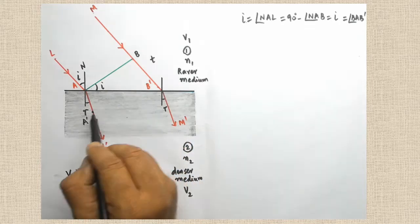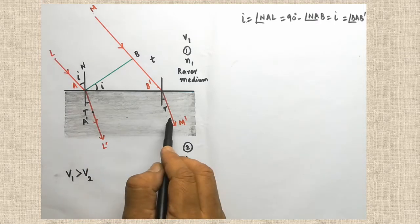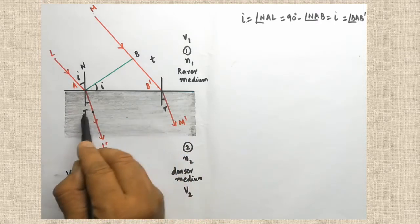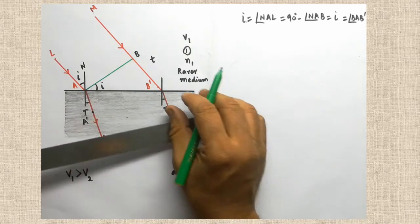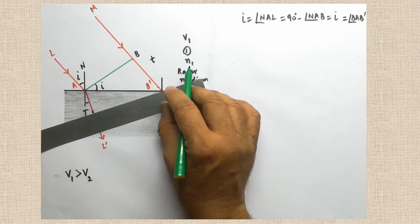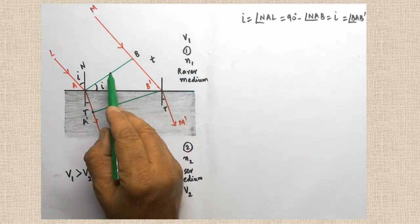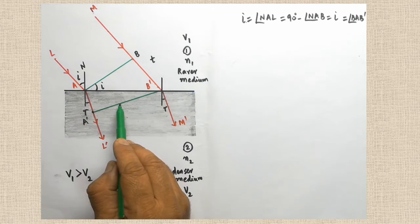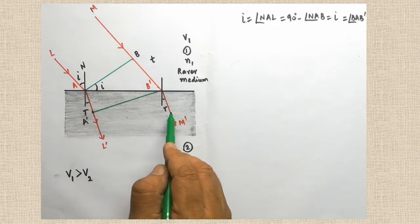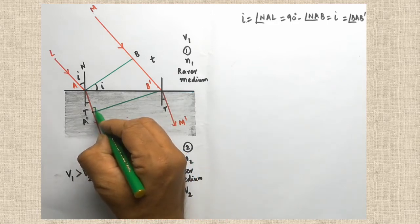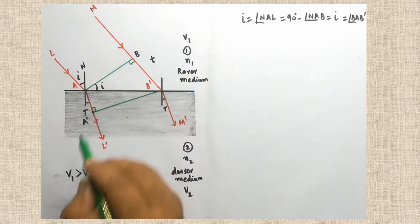Now we have to draw the wavefront for the refracted rays. These two are the refracted rays; for these two I have to draw the wavefront by drawing a perpendicular line. I am drawing a perpendicular green color line. This is called the incident wavefront, and this is called the refracted wavefront, because it is drawn for the two refracted waves. Here you can see perpendicular angles of 90 degrees at both points.